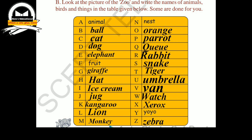B for ball, C for cat, D for dog, E for elephant, F for fruit is already given, G for giraffe, H for hat, I for ice cream, J for jug, K for kangaroo, L for lion, M for monkey, N for nest, O for orange, P for parrot, Q for queue, R for rabbit, S for snake, T for tiger, U for umbrella, V for van, W for watch, X for xerox, Y for yoyo, Z for zebra. Completed without mistakes.